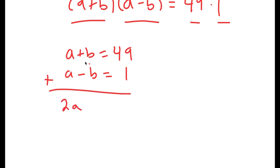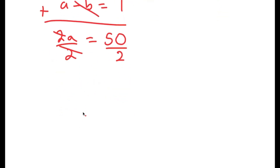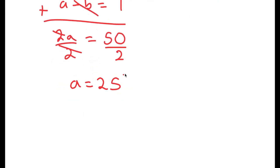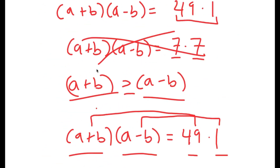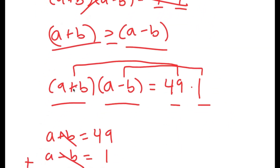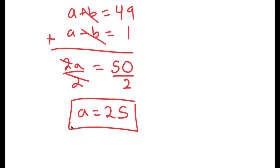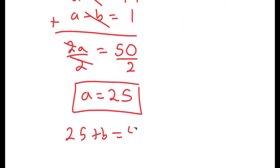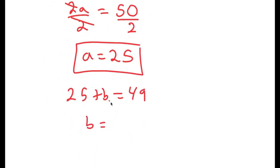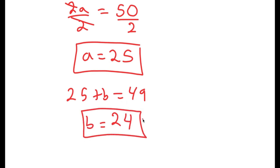Adding the system: a plus a is 2a, b and negative b cancel out, and 49 plus 1 is 50. So I get 2a equals 50, and dividing both sides by 2, I get a equals 25. Now that we know a equals 25, and a plus b equals 49, this means 25 plus b equals 49, and b equals 49 minus 25, which is 24. So a equals 25 and b equals 24.